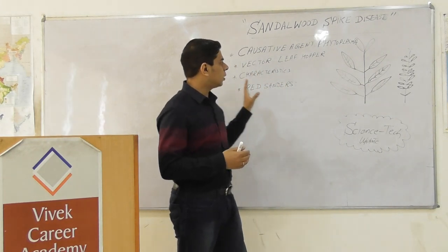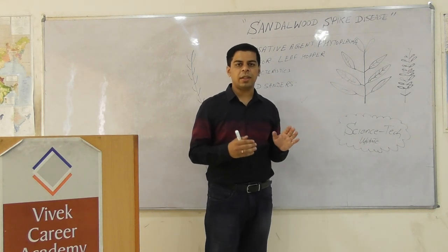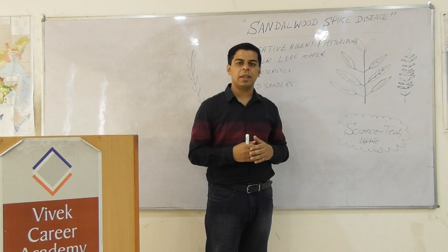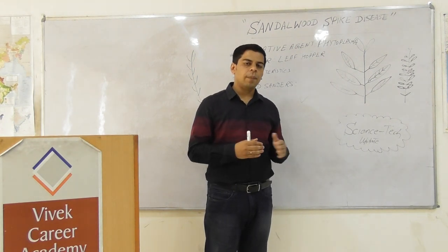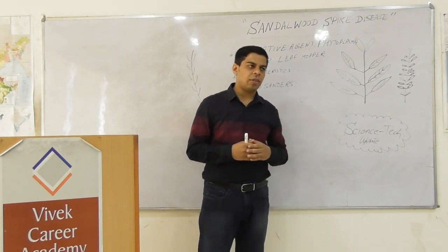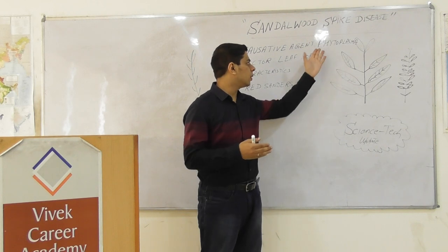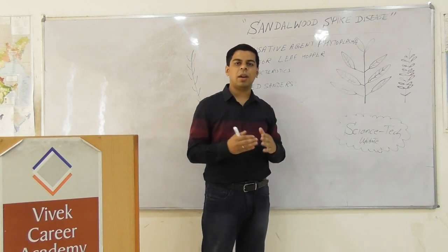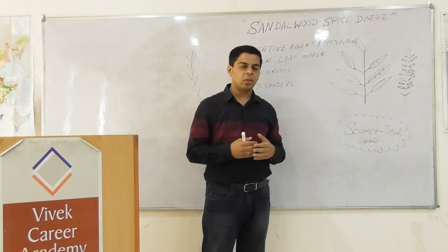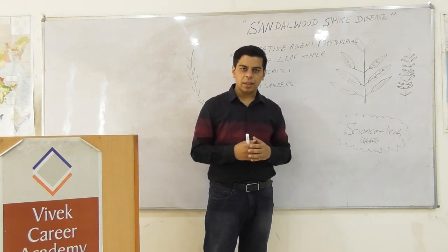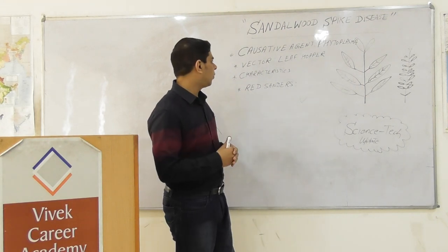This is a vector-borne disease. Once one plant gets infected, nearby plants also get infected, and transmission is mainly through insects. The insect vector is the leafhopper. A leafhopper carrying this bacteria can transmit it to another plant, and in close vicinity — such as in a forest — plants in the area generally all get infected. So if asked about the vector, the answer is the leafhopper.